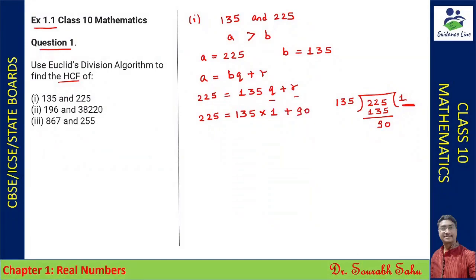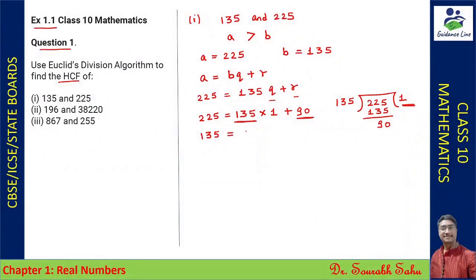In the second step, we have to consider 135 as the new a and the remainder 90 as the new b. So now I can rewrite the equation as 135 = 90q + r.